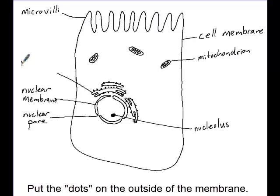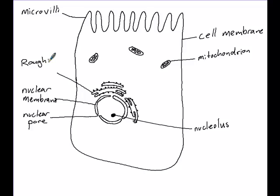It's the rough endoplasmic reticulum. Rough because it's got ribosomes stuck to the outside of it. I haven't actually labeled the ribosomes, but you could put a line to a ribosome saying attached ribosome.